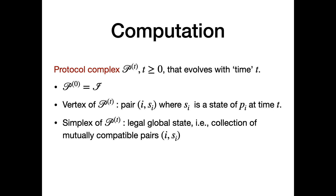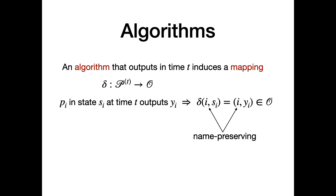Computation can also be modeled in the framework of topology by defining protocol complexes, which are indexed by time t. At time 0, the protocol complex is simply the input complex. At time t, a vertex of the protocol complex Pt is a pair (i, Si), where Si is the state of process Pi at time t. A simplex of Pt is a set of legal global states — the collection of mutually compatible pairs (i, Si).